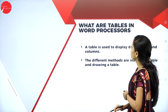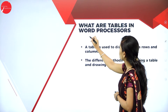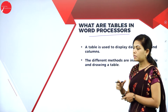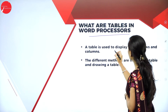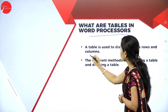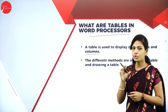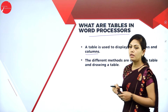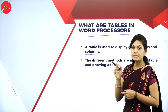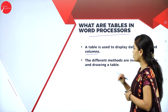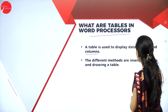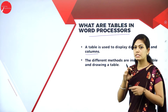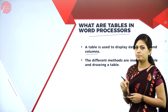Next: what are tables in word processors? A table is used to display data as rows and columns. If you want to insert rows and columns, go to the Table option under Insert and select the table option. The different methods are inserting a table and drawing a table. A table is in the form of rows and columns.